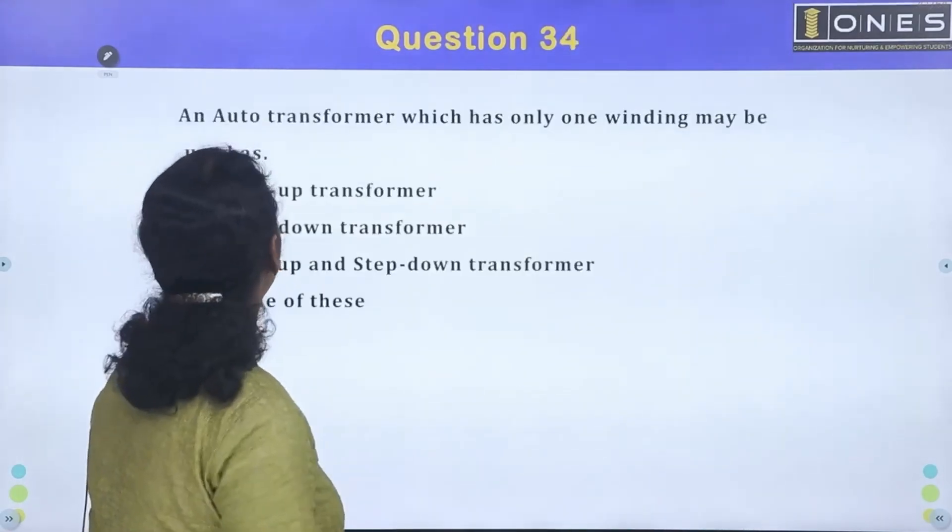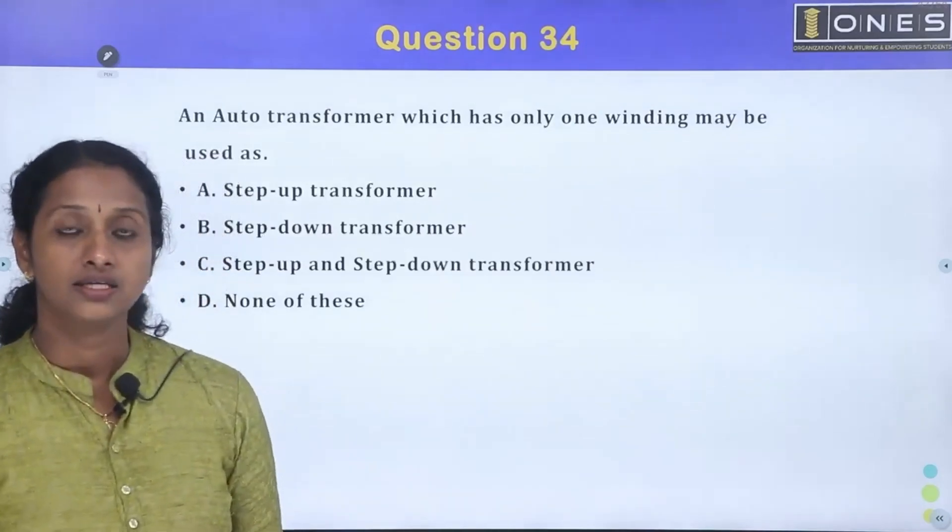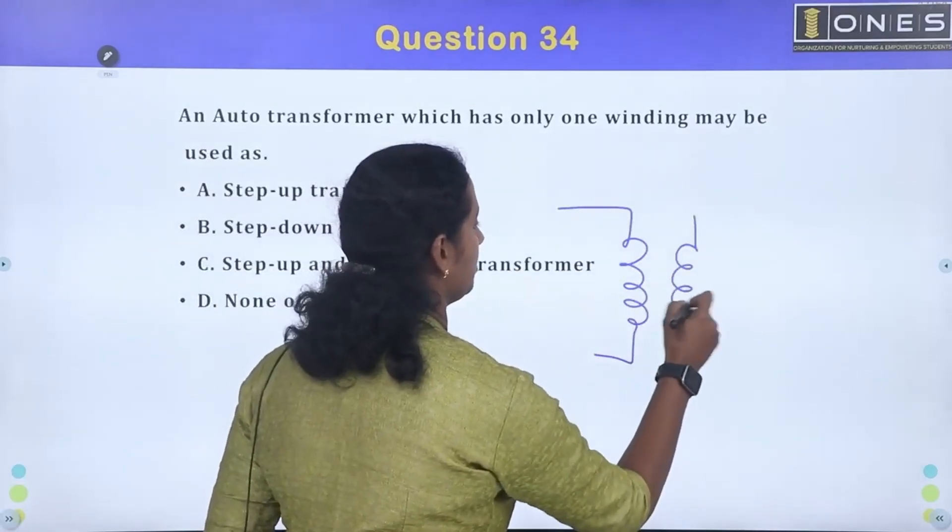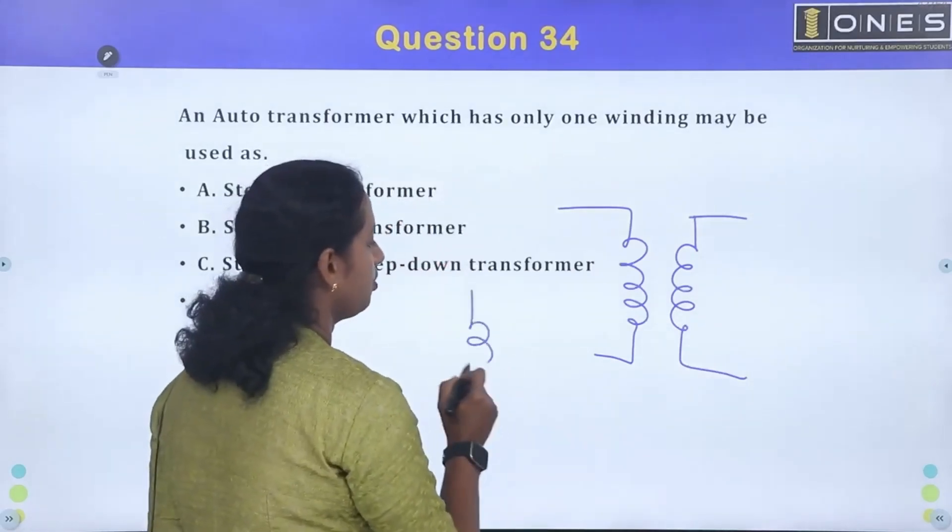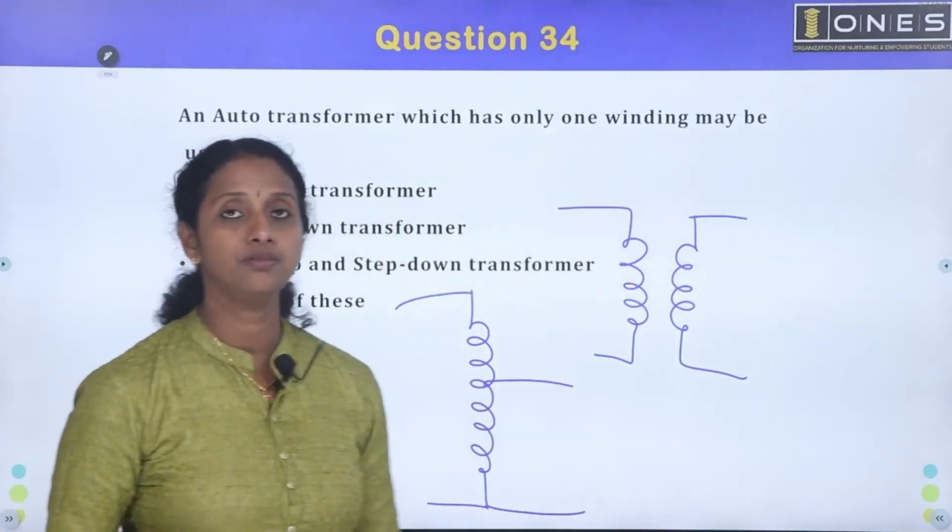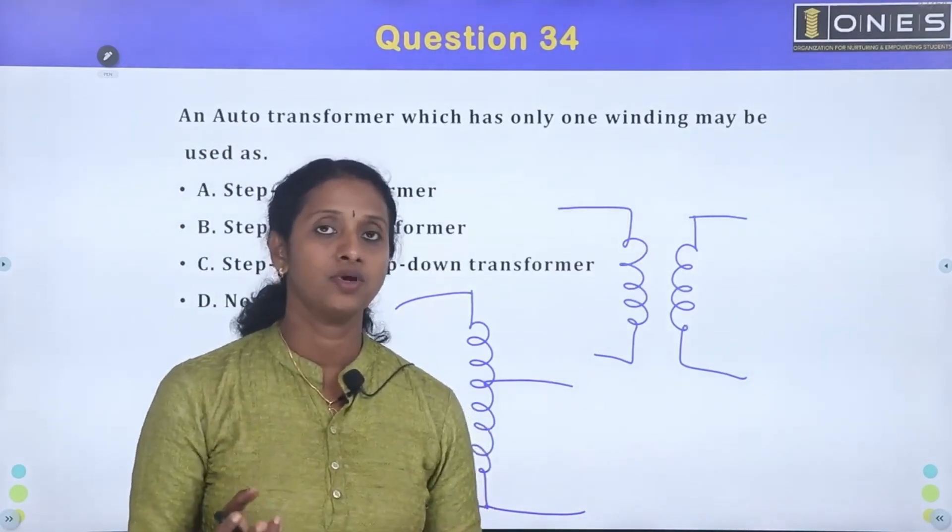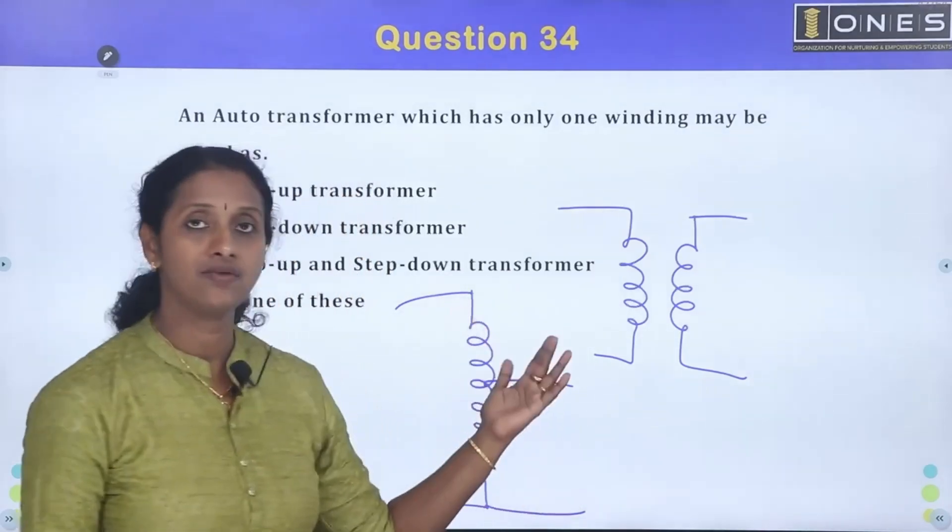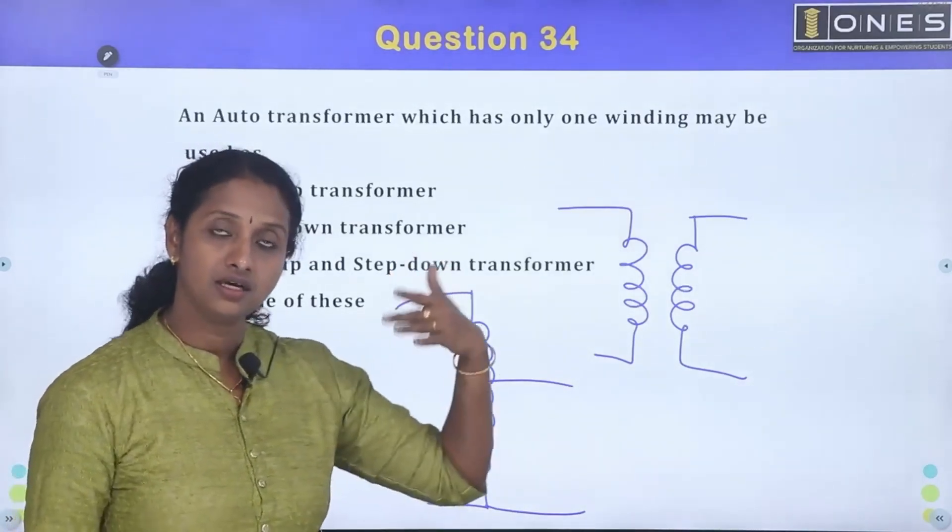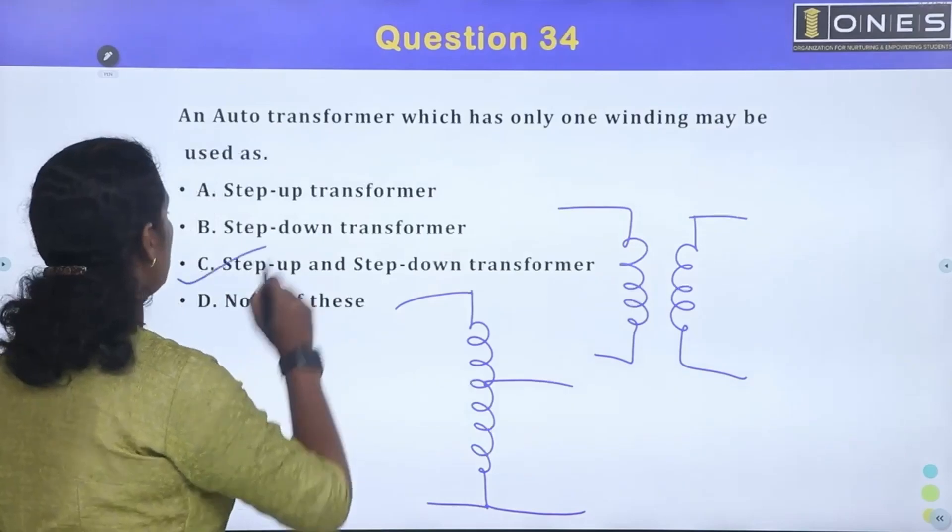An auto transformer which has only one winding may be used as - step up transformer, step down transformer. We can do this winding step up or step down. Of course, we need copper cost. Amount of copper required is needed. That is the advantage of saving of copper in the case of auto transformer. Auto transformer is needed. Step up or step down. Option C is correct answer.